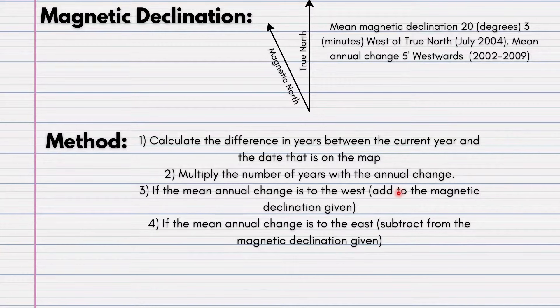Most of our South African maps, if not all, are westwards. We can see here it says your mean annual change, 5 minutes westwards. If you do find a map that is eastwards, you will have to do what it says in step 4. It's completely different to step 3.